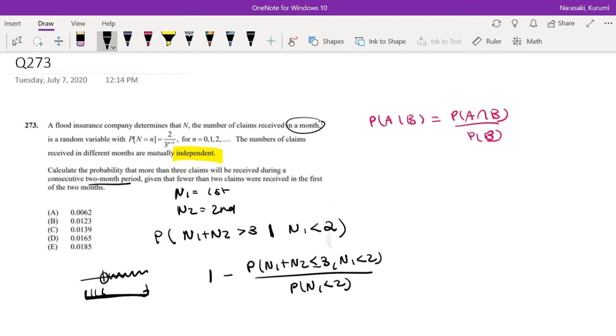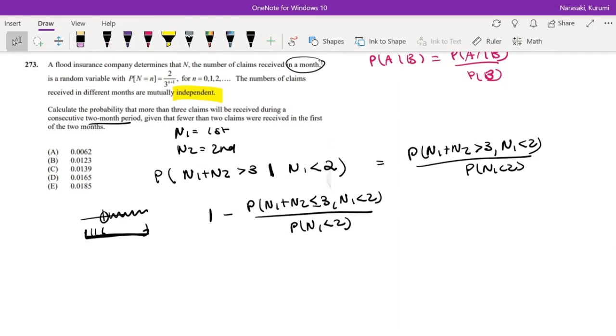And so then this conditional probability looks like this: n1 plus n2 is greater than 3 and n1 is less than 2, divided by probability that n1 is less than 2. Okay so we take the complement of that, so it's easiest for us to find the numerator. Let's just work on the denominator first. When can n1 be less than 2? Well it could be less than 2 when n1 is 0 or n1 is 1. So the denominator we can rewrite as probability of 0 plus probability of 1.